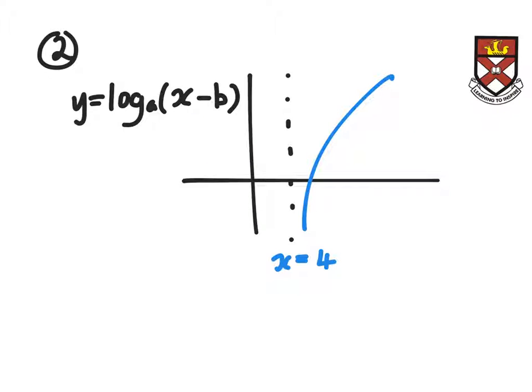For question 2, this time we've got a log graph. You know that the log graph normally has this line here as an asymptote. But however, it's been moved across to here. So the number that has been moved across is what you're going to substitute in here. And it's kind of obvious what that is.